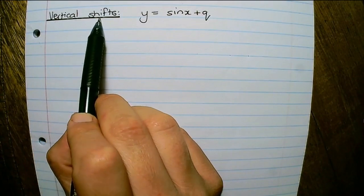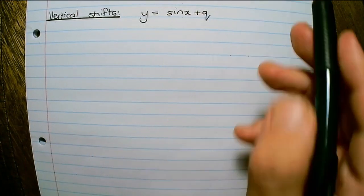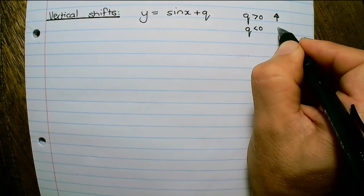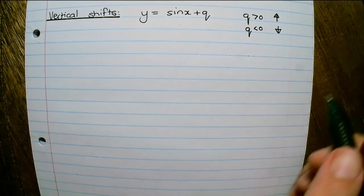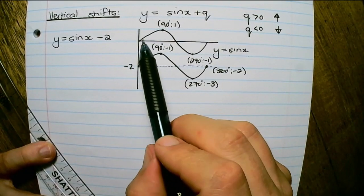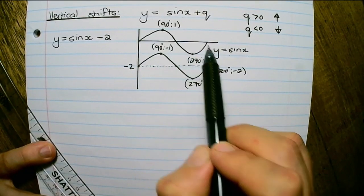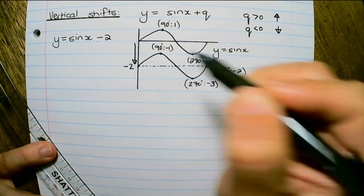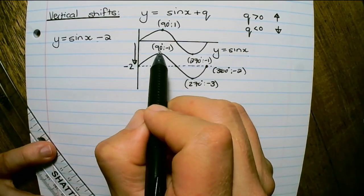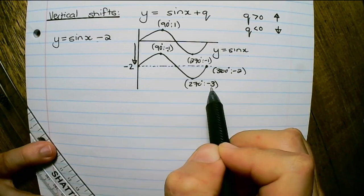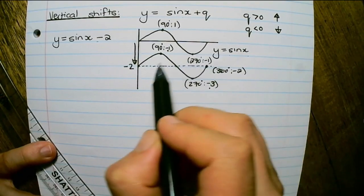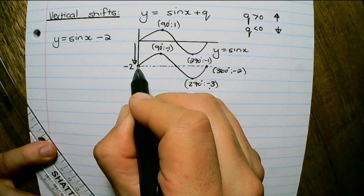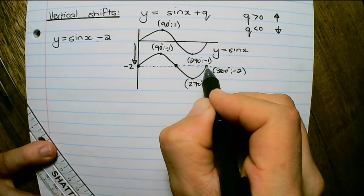Next up, we have vertical shift: y equals to sin x plus q, where a positive q value moves the graph up and a negative q value shifts it downwards. For example, if we have y equals to sin x minus 2, the whole graph is shifted down by 2 units. So the new maximum is at negative 1, the new minimum is at negative 3, and the graph rotates around y equals to negative 2 — meaning it will reach negative 2 at 0 degrees, 180 degrees, and 360 degrees.